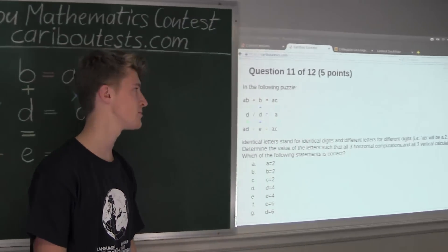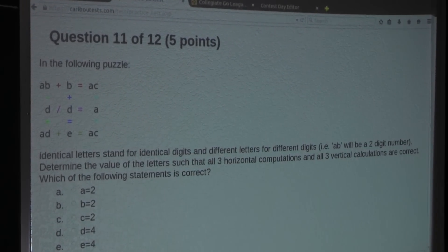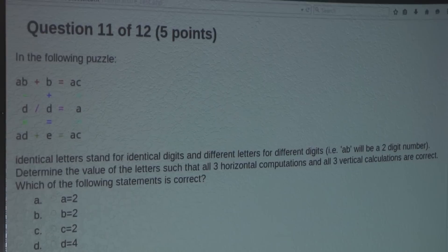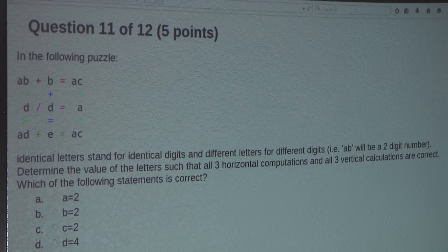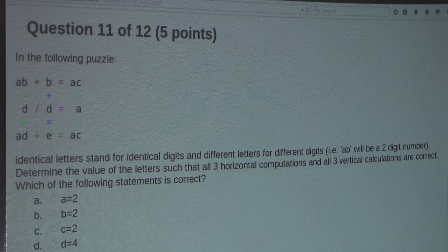So the question is, identical letters stand for identical digits, and different letters for different digits. For example, AB will be a two-digit number. Determine the value of the letters such that all three horizontal computations and all three vertical calculations are correct. Which of the following statements is correct?